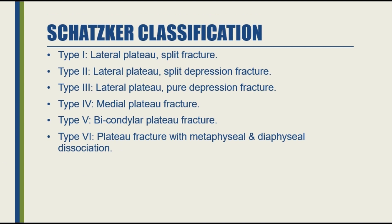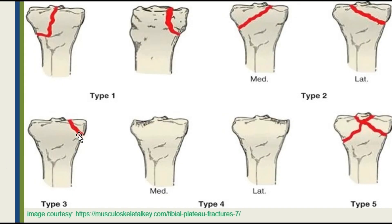The next classification system is Hohl and Moore, which has five types. Type 1 is a coronal fracture, either on the medial or lateral side. Type 2 is an entire condylar fracture where the whole condyle — either medial or lateral — is involved.